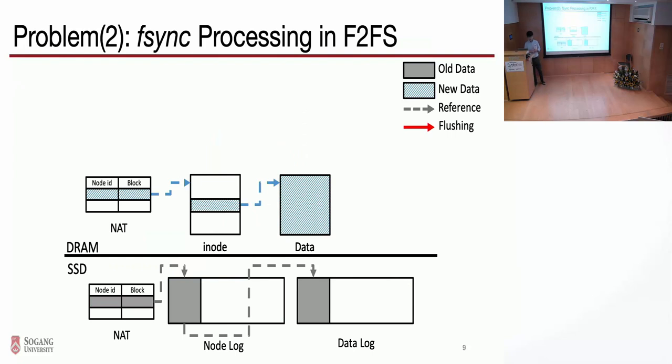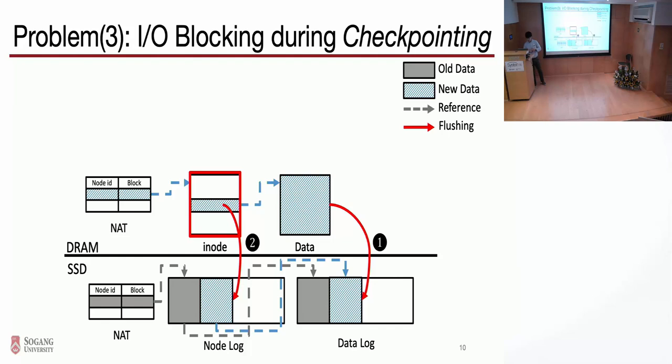The second problem is the high processing time of the F-sync system call. This shows how F2FS processes the F-sync system call. First, when they process the F-sync, they flush the data. Then they flush the whole inode log entry, even though we only modified a small portion of the inode. The second scenario is the private file write followed by F-sync.